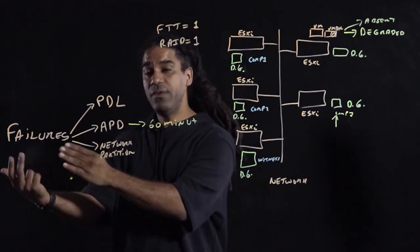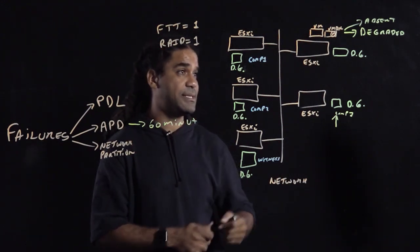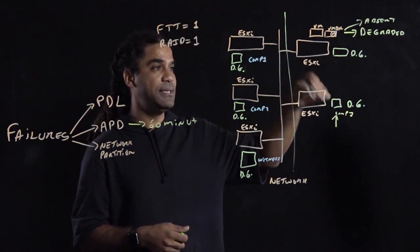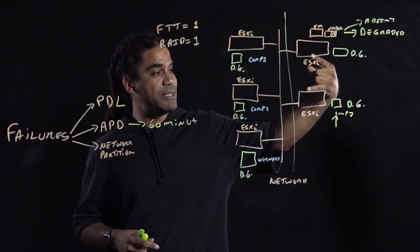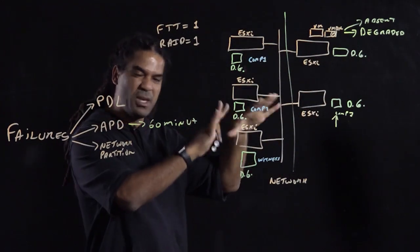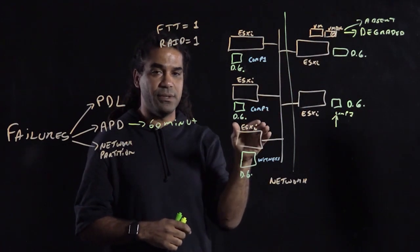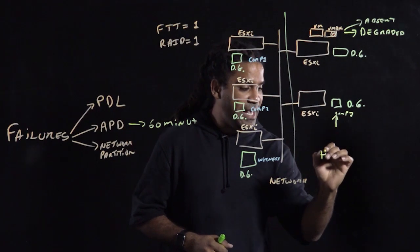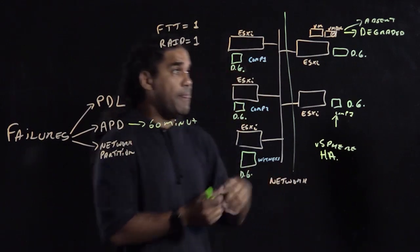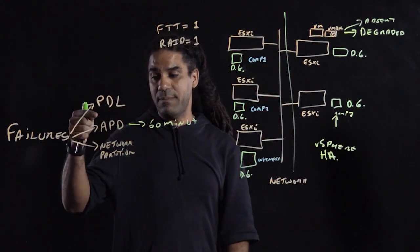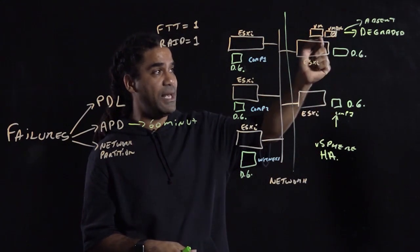And finally, the other failure, which is a network partition, will be similar to doing this. These two guys cannot see these three guys. Now, from a vSAN perspective, this two, what's happening here is that, remember the components are over here, just to keep it simple. This VM is no longer reaching the vSAN data store. So vSAN, vSphere HA, comes in, kicks in, and goes, oh, that host is isolated. You should have a PDL and APD of shut down the VM when this happens. So vSphere HA will shut down that VM, and HA will recover that VM over here.